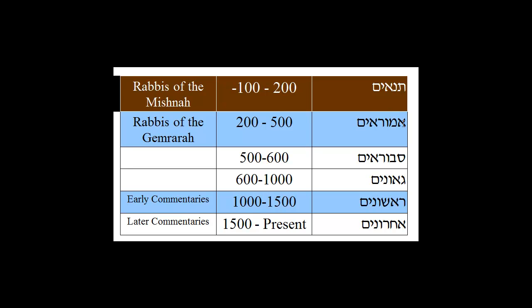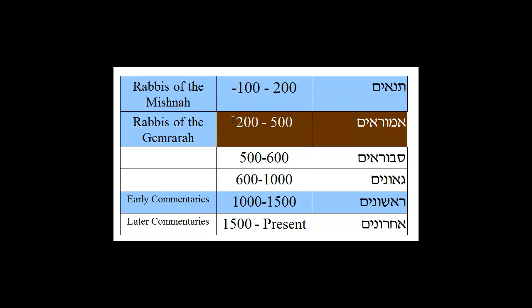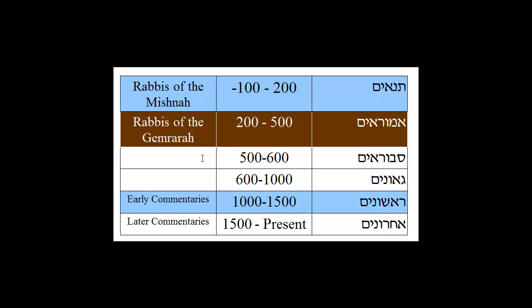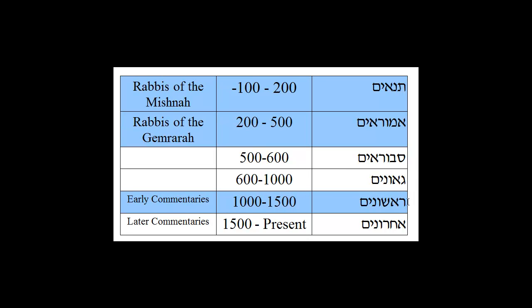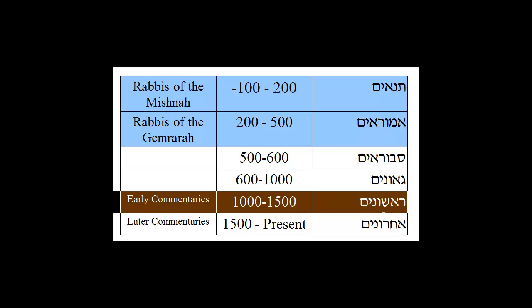The next era, from around the year 200 to the year 500, is the era of the Amoraim. The Amoraim are the rabbis of the Gemara — they discussed, extrapolated, and analyzed the words of the Tanaim. The word Amoraim means 'interpreters.' We're going to skip the eras of the Savaraim and Gaonim, and move to the Rishonim — approximately the year 1000 to 1500 — known as the early commentaries. So the three Tkufot we need to know are: the Tanaim, the Amoraim, and the Rishonim.